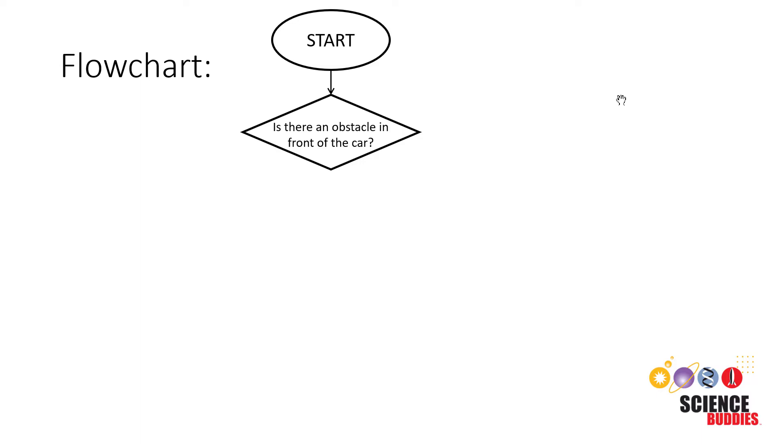Then we're going to check our first condition. We represent that using a diamond. Is there an obstacle in front of the car? If yes, then we're going to take an action, which we represent with a rectangle. In this case, that's drive around the obstacle while ignoring the infrared sensor readings. If there is no obstacle in front of the car, then we're going to check if the right infrared sensor sees a line.